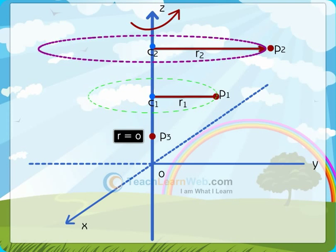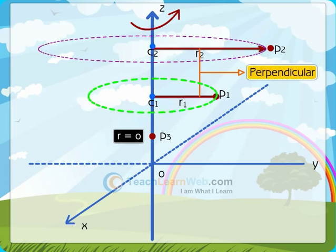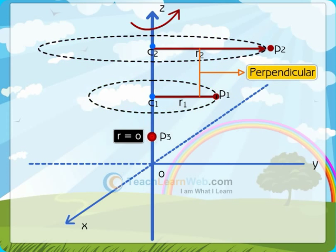Every particle of rigid body rotates around an axis of rotation perpendicular to its plane. Particle on axis does not rotate as it is on the axis and axis does not rotate.